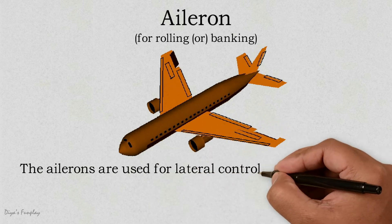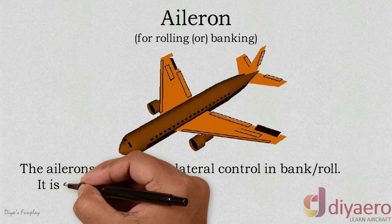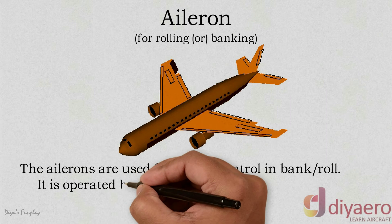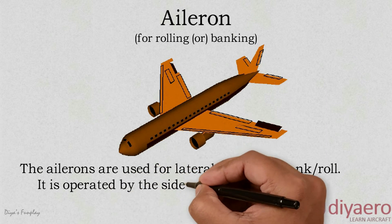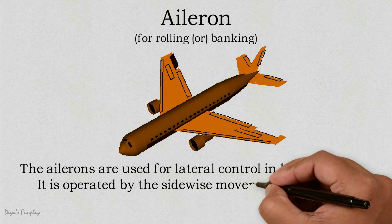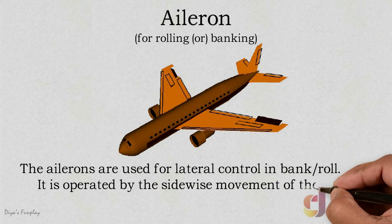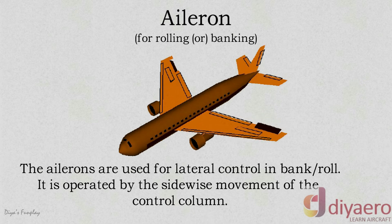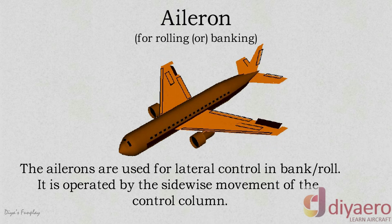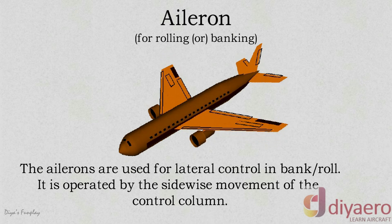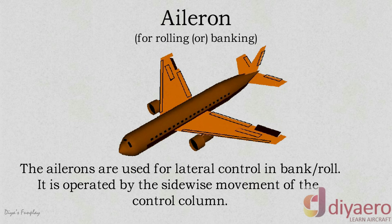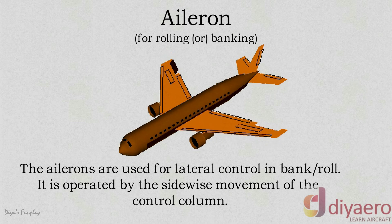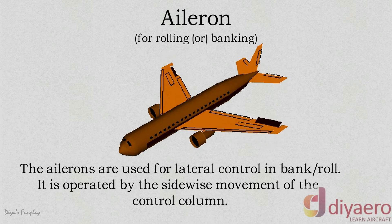This increases the lift in one wing and decreases the lift in the other wing. For a wing to rise, the aileron should be deflected downwards, and for a wing to go down, the aileron should be deflected upwards. In short, the down-going aileron is on the up-going wing and the up-going aileron is on the down-going wing.